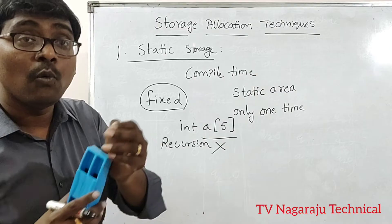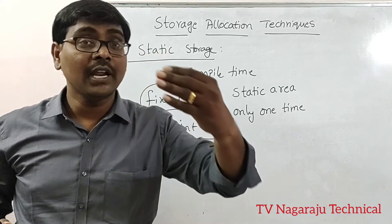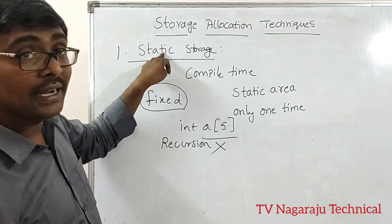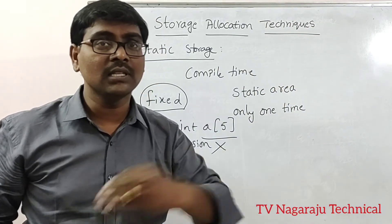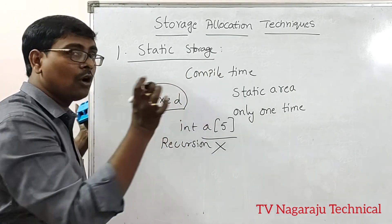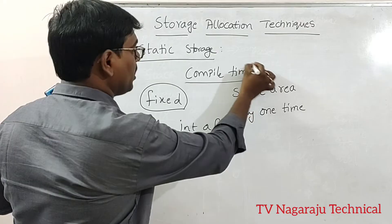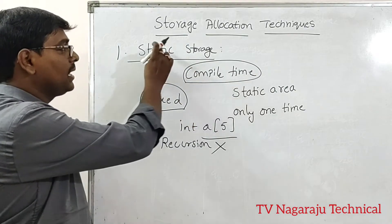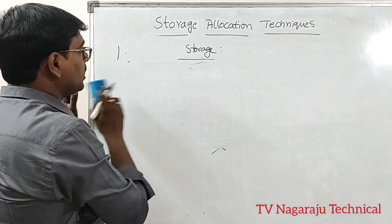One more problem is that static memory allocation does not support the concept of recursion. Recursion means a function calls itself, so each time you need to update temporary variables. But in static allocation, it retains the local names, so it is not possible to use recursion. Simply remember: static storage allocation means assigning memory at compile time.